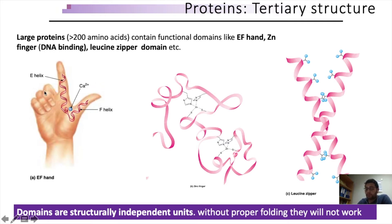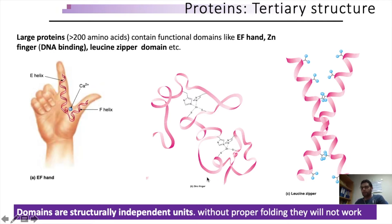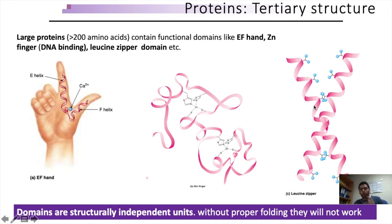The EF hand motif helps visualize the three-dimensional structure of the calcium-binding domain. The zinc finger is widely present in many DNA-binding proteins, and the presence of cysteine residues provides an active site for the binding of zinc atoms. The leucine zipper is another example of a DNA-binding domain, with leucine residues present in the secondary and primary structure of the protein. Without proper folding, these domains do not work.